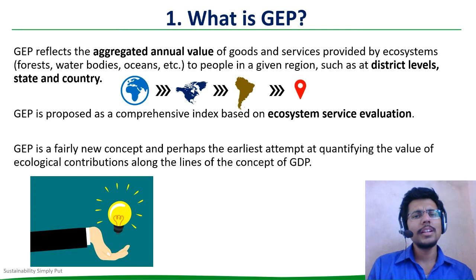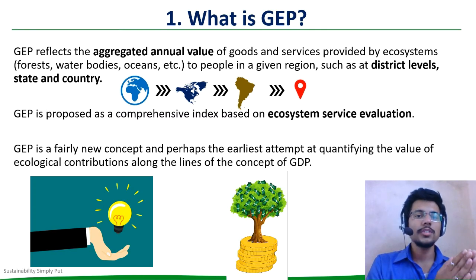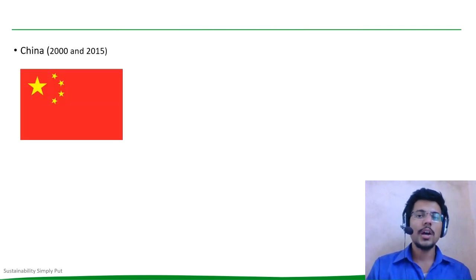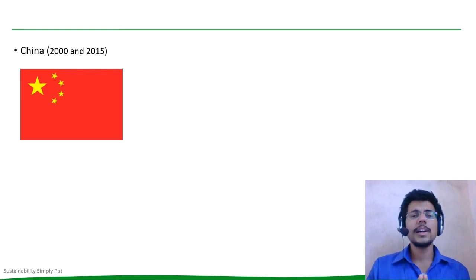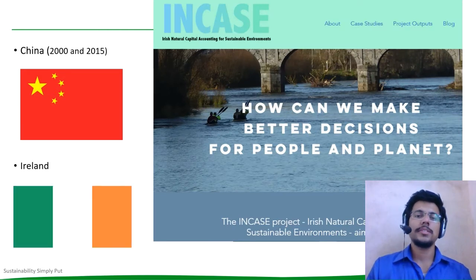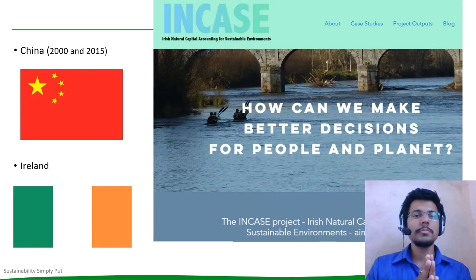GEP is a fairly new concept and perhaps the earliest attempt at quantifying the value of ecological contributions along the lines of the concept of GDP. Finding out Gross Ecosystem Product was a study carried out in China between the year 2000 and 2015. A similar project called INCASE — Irish Natural Capital Accounting for Sustainable Environments — is also currently underway in Ireland. It entails accounting of bio-physical value of ecosystem goods and services.